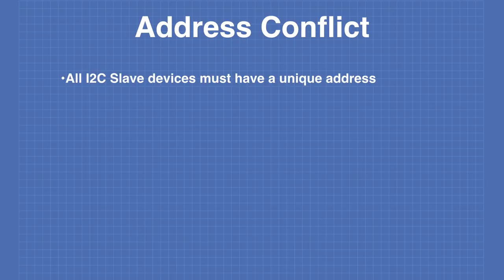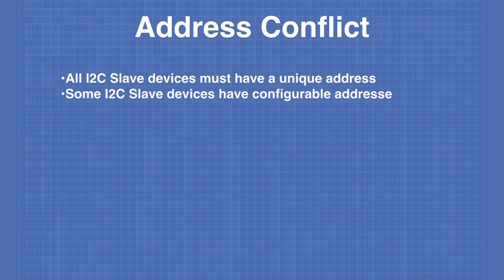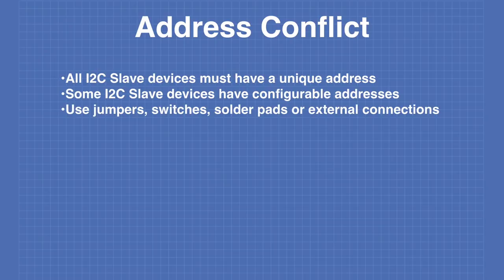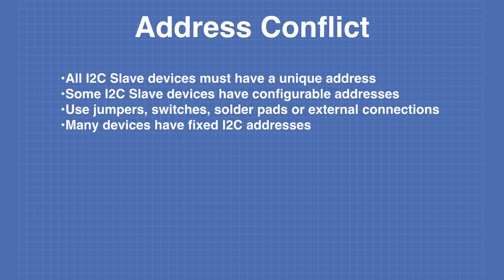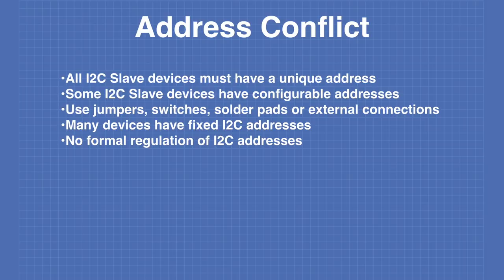All I2C slave devices must have a unique address. Some I2C slave devices such as sensors and displays have configurable addresses — these use jumpers, switches, solder pads, or external address connections to alter their base I2C address. However, many devices have a fixed I2C address that is not alterable. Unfortunately, there is no formal regulation of I2C addresses, so it is entirely possible for two manufacturers to make a device with the same address.